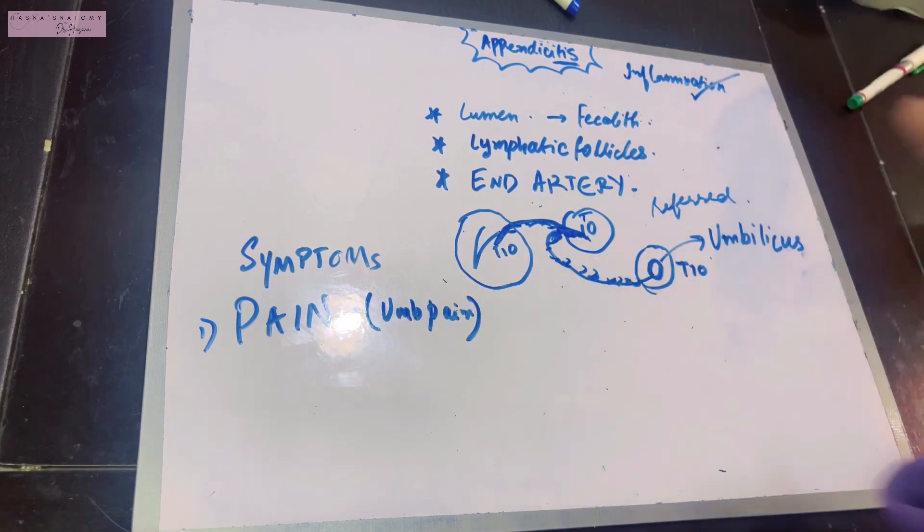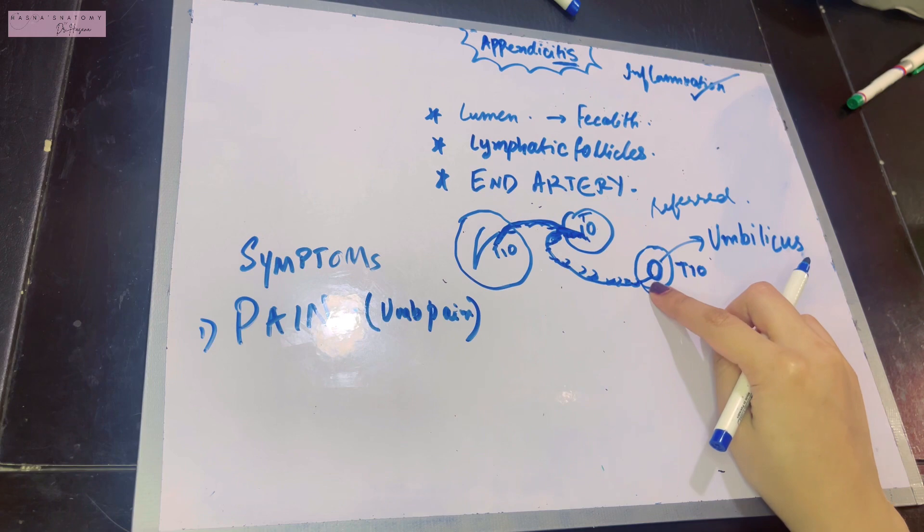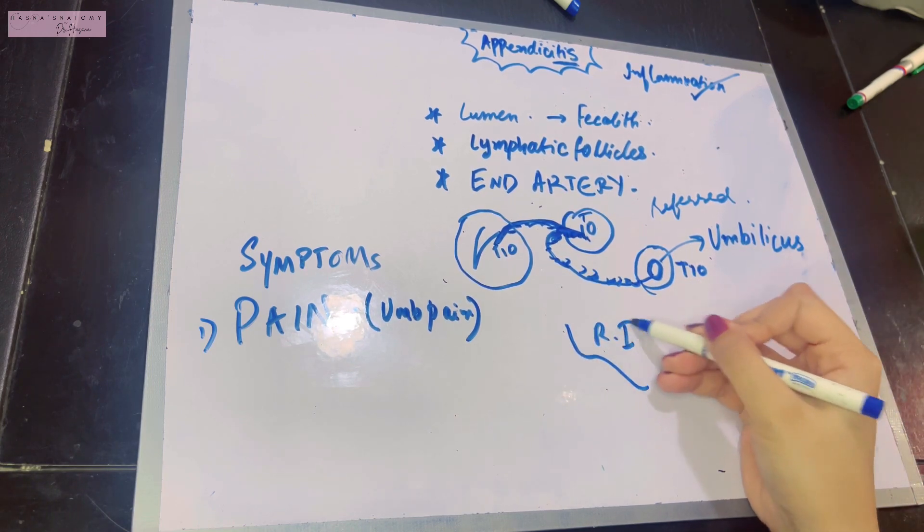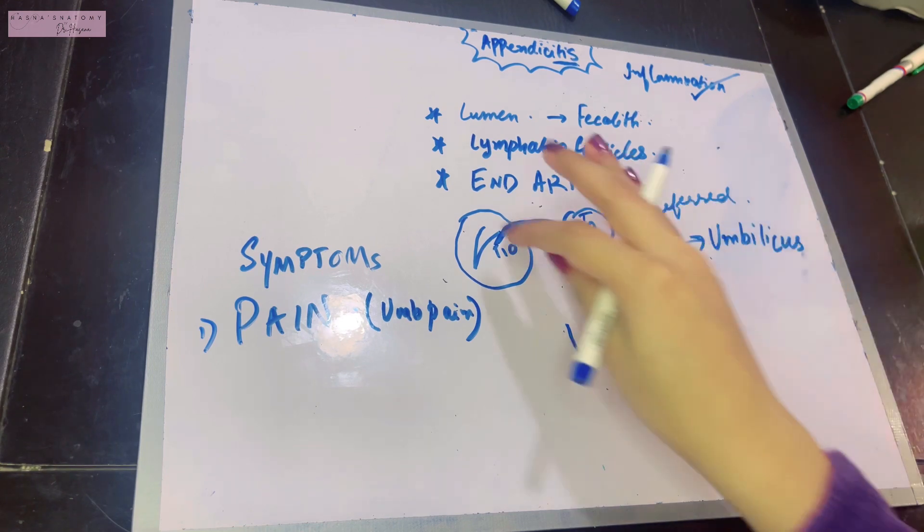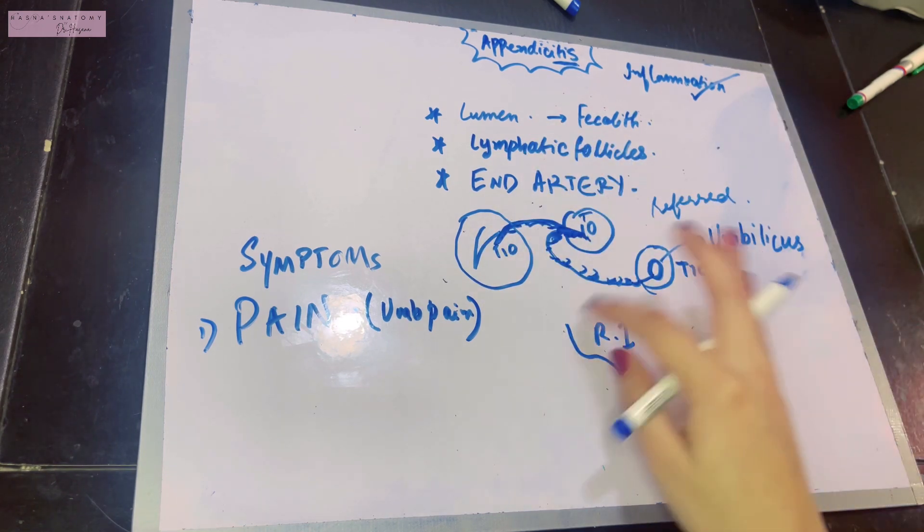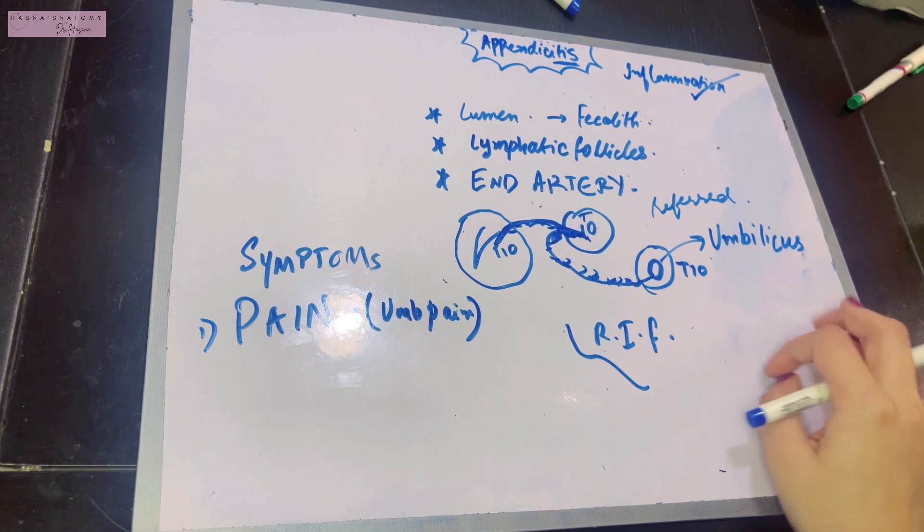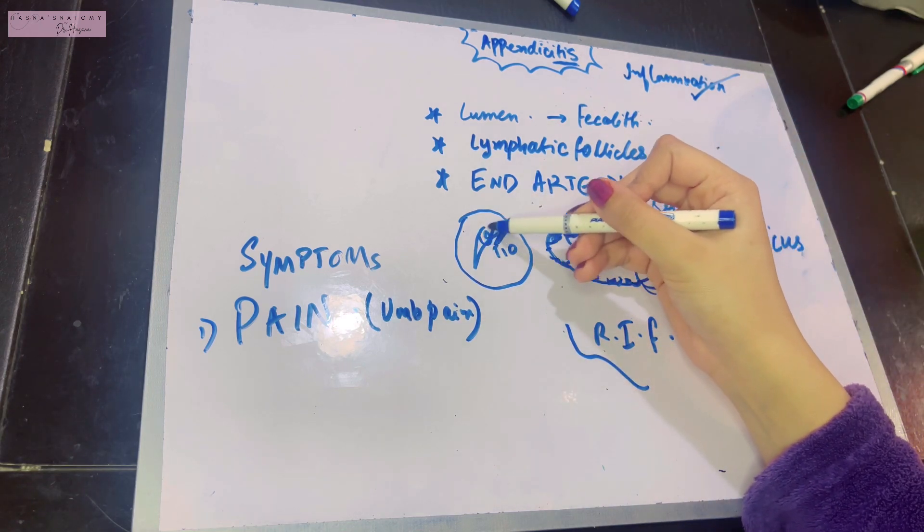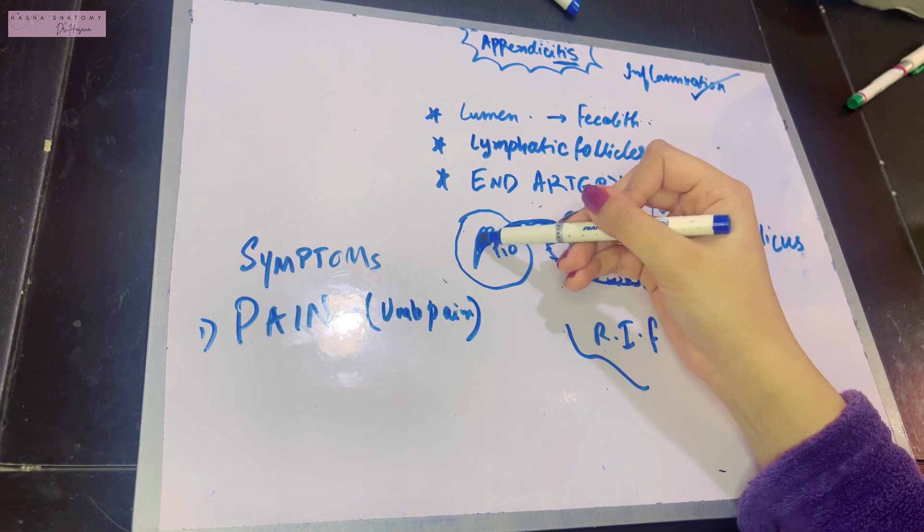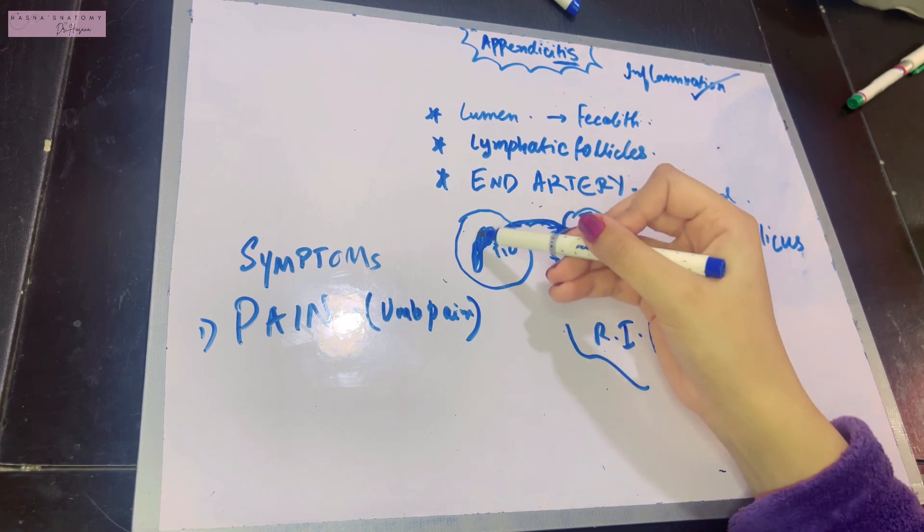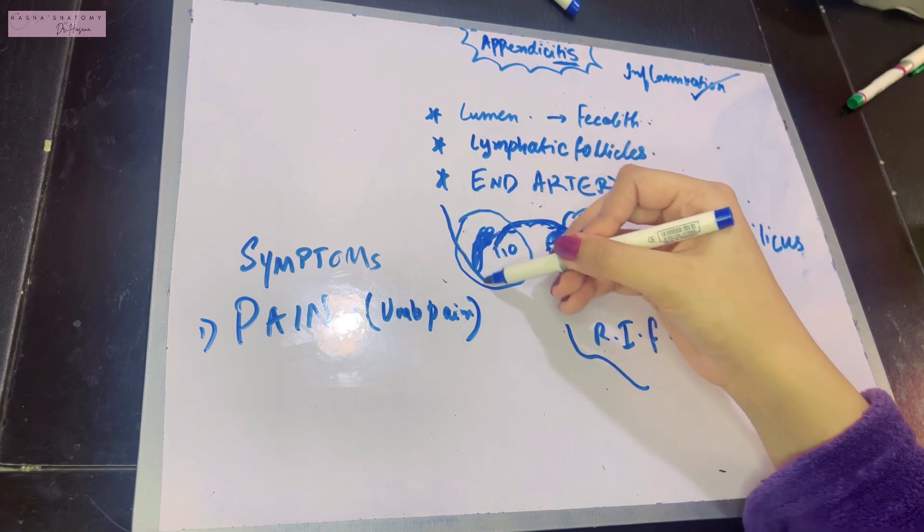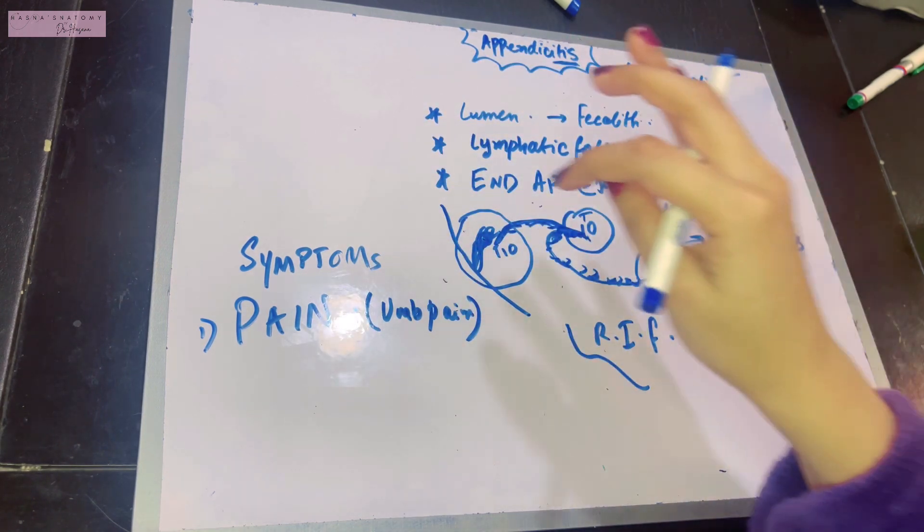What happens next? This pain reaches the right iliac fossa. If you're not going to fix the appendix, how does it reach the iliac fossa? Simple: when the appendix undergoes appendicitis and starts to worsen, it affects the organs around it, more specifically the parietal peritoneum surrounding it.